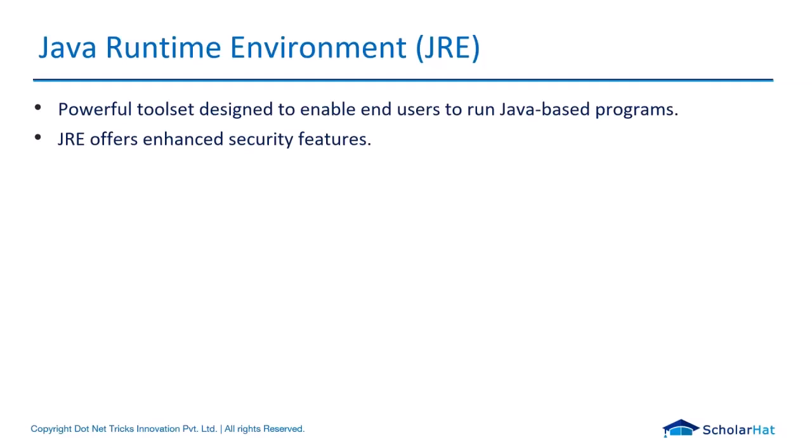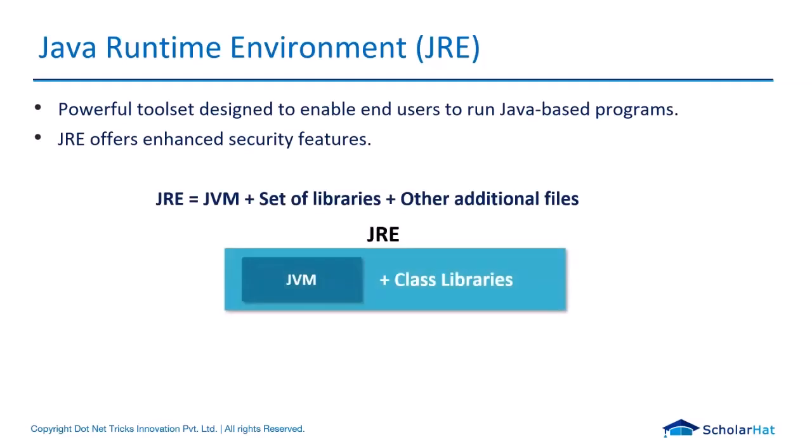Java Runtime Environment is also a powerful toolset designed to allow end users to run Java-based programs. It offers a variety of security features like encryption, decryption, and data transfer techniques. In summary, JRE equals JVM plus a set of libraries plus other additional .jar files. JDK consists of JRE plus development tools like compilers, iterations, and debuggers.